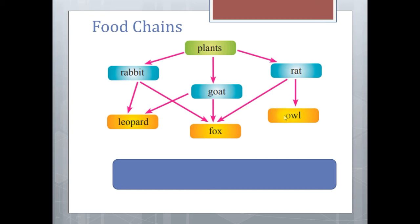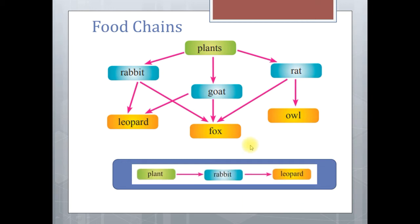From the food web, we can write a connection from the plant to the leopard like this: plant eaten by the rabbit and the rabbit is eaten by the leopard, and it is a linear connection. So here the interaction for the food is started from plant and it connects to other animals like a chain.